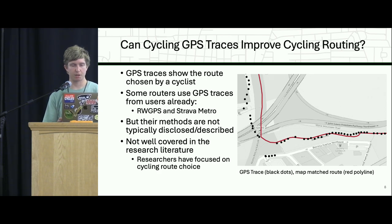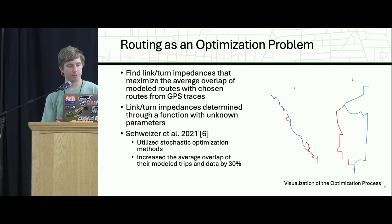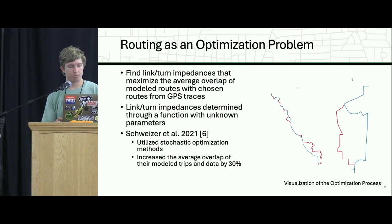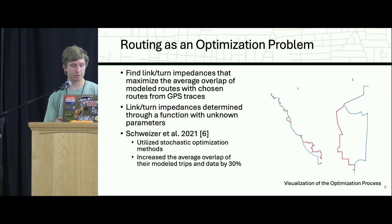Additionally, this is not very well covered in research — research tends to focus on cycling route choice, which is a different topic. One paper I did find looked at routing as an optimization problem, finding the link impedances that maximize the average overlap between what you're modeling and what was actually chosen. Link and turn impedances are determined through a function with unknown parameters selected via stochastic optimization, and that paper was able to increase their overlap between the two by about 30 percent.